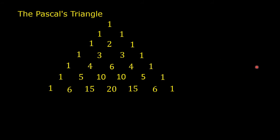The next diagonal contains tetrahedral numbers. Tetrahedral numbers are triangular pyramidal numbers — a three-dimensional version of the triangular numbers: 1, 4, 10, 20. The next diagonal contains pentatop numbers: 1, 5, 15.